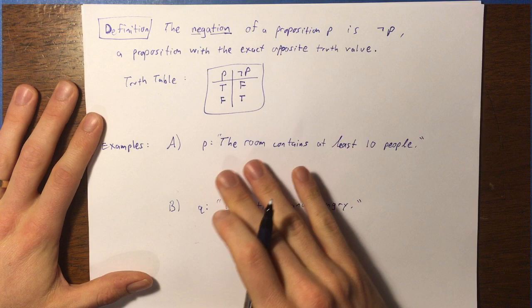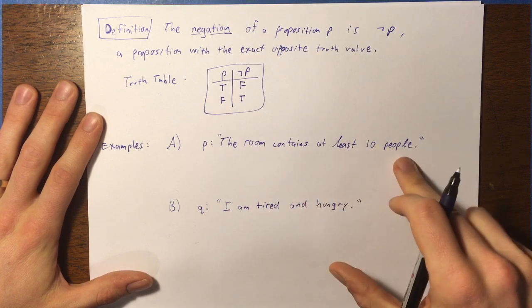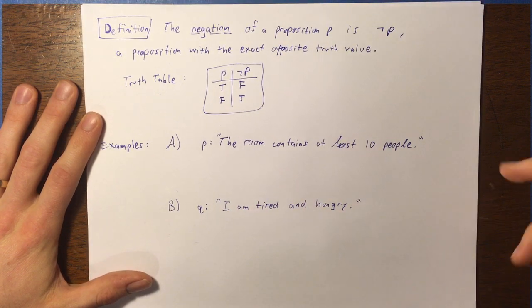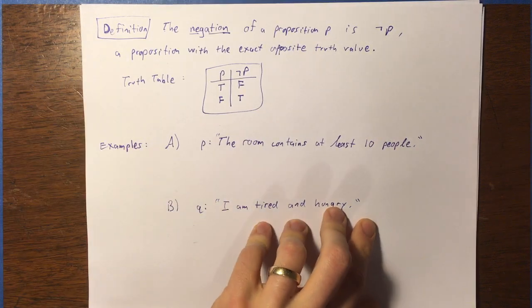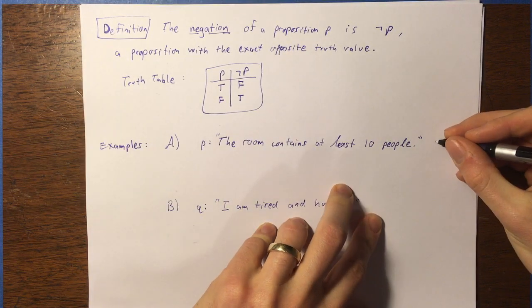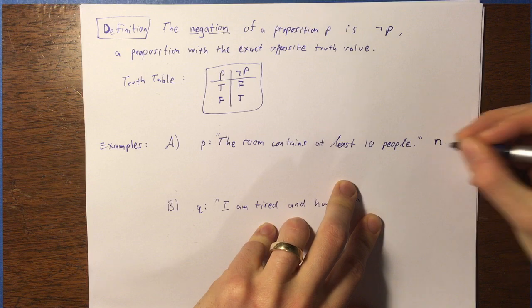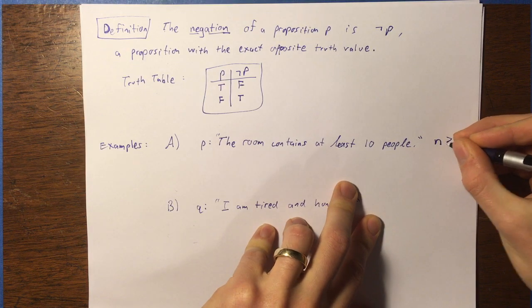Now, first let's think about what this is saying. At least 10 people would mean 10 or more, right? So we could express this mathematically by saying the number of people in the room, n, is greater than or equal to 10.